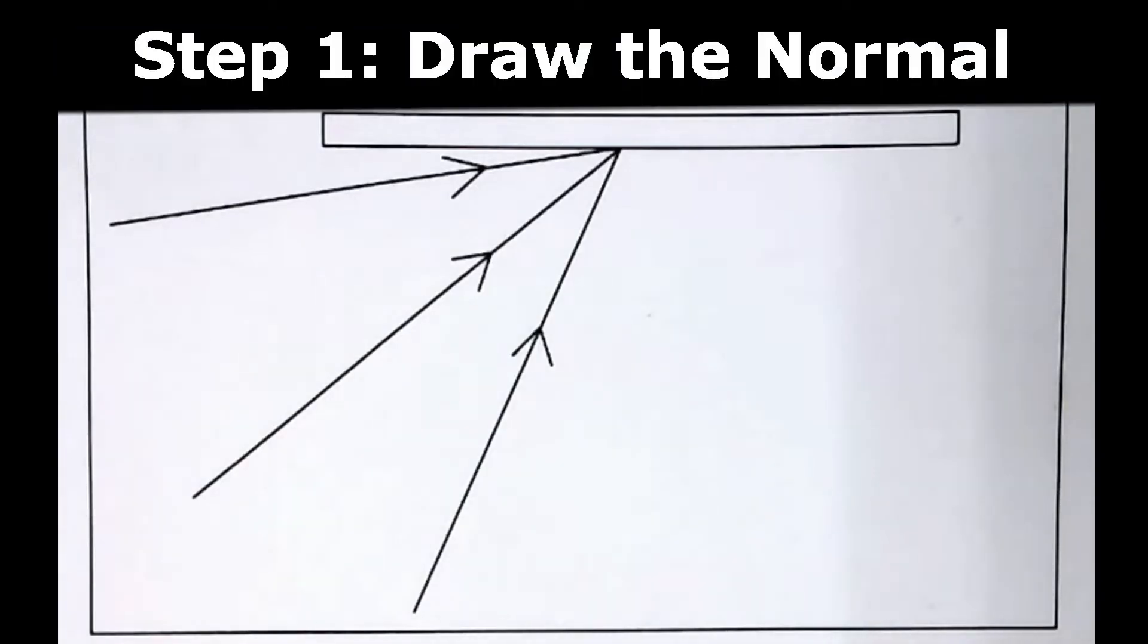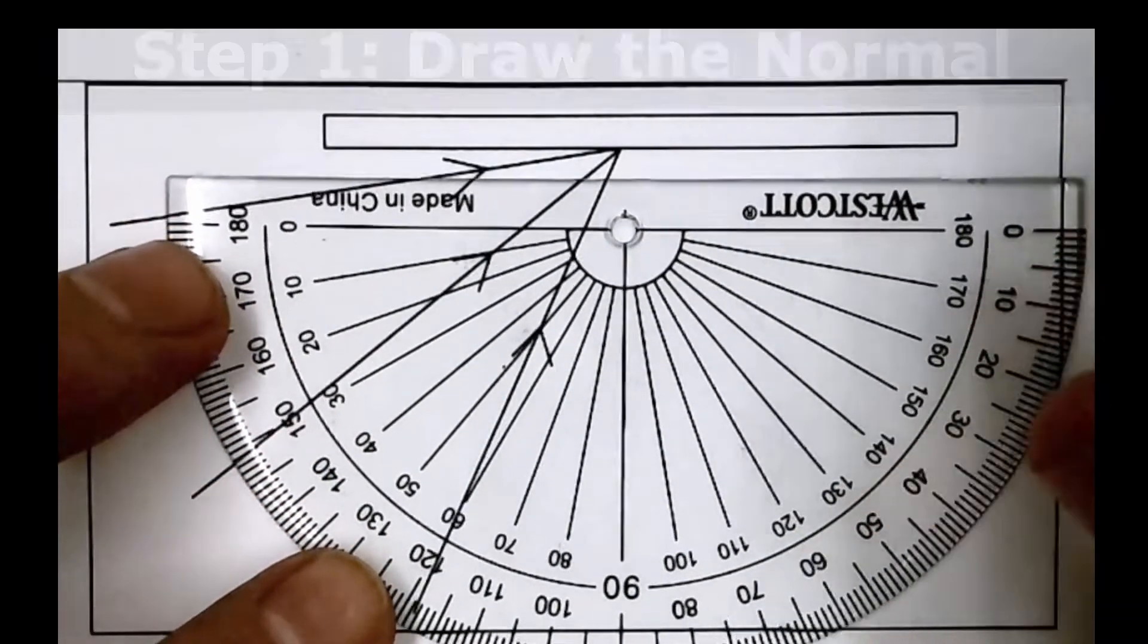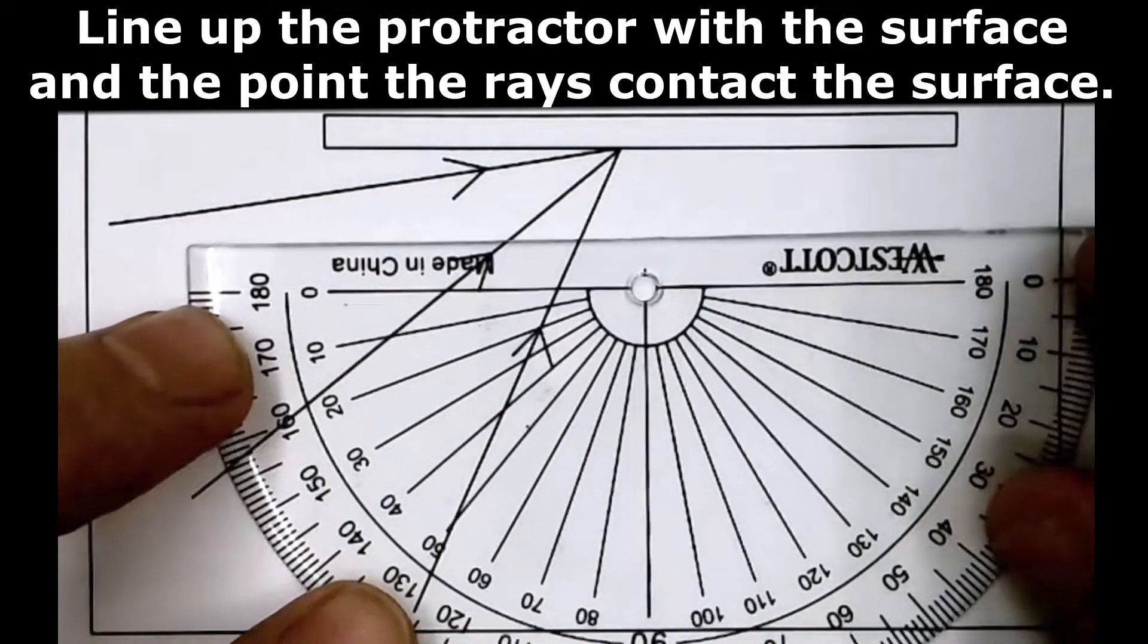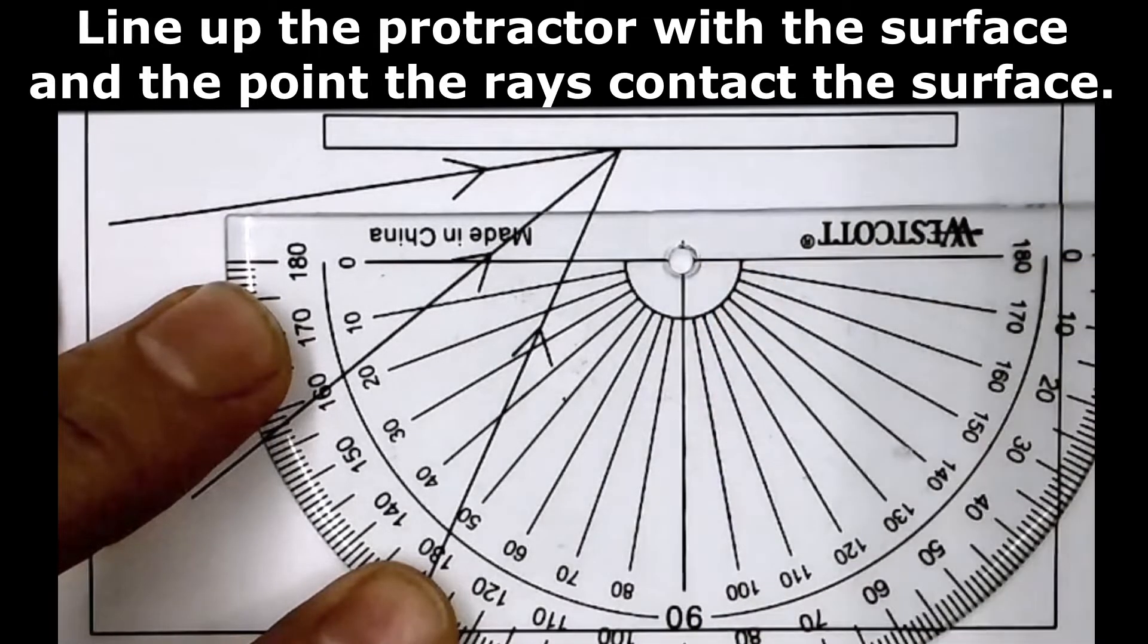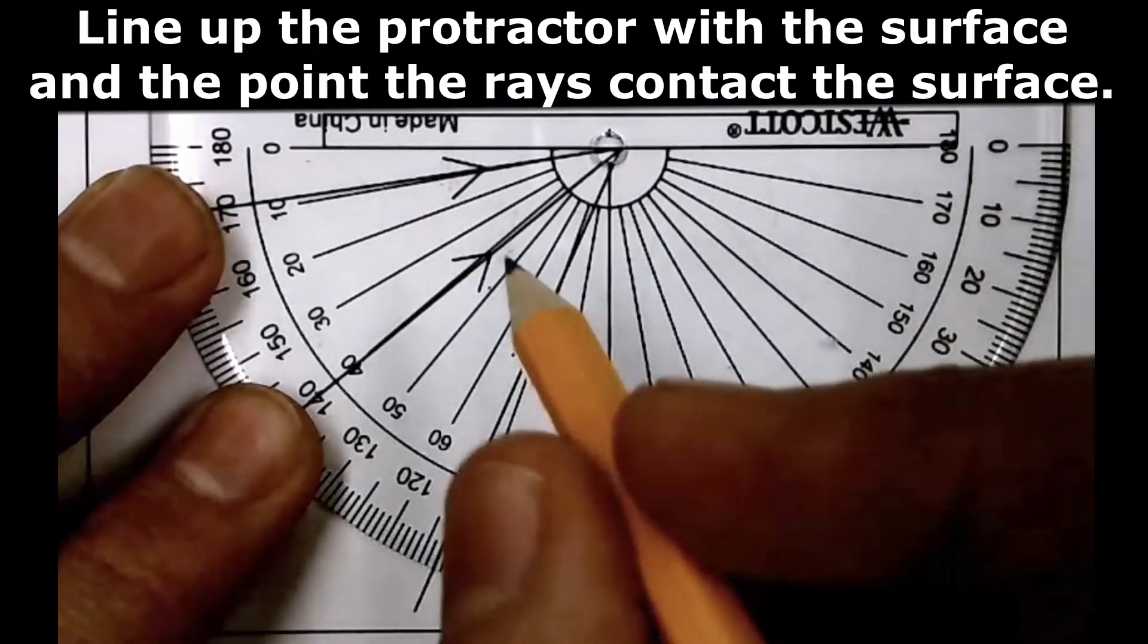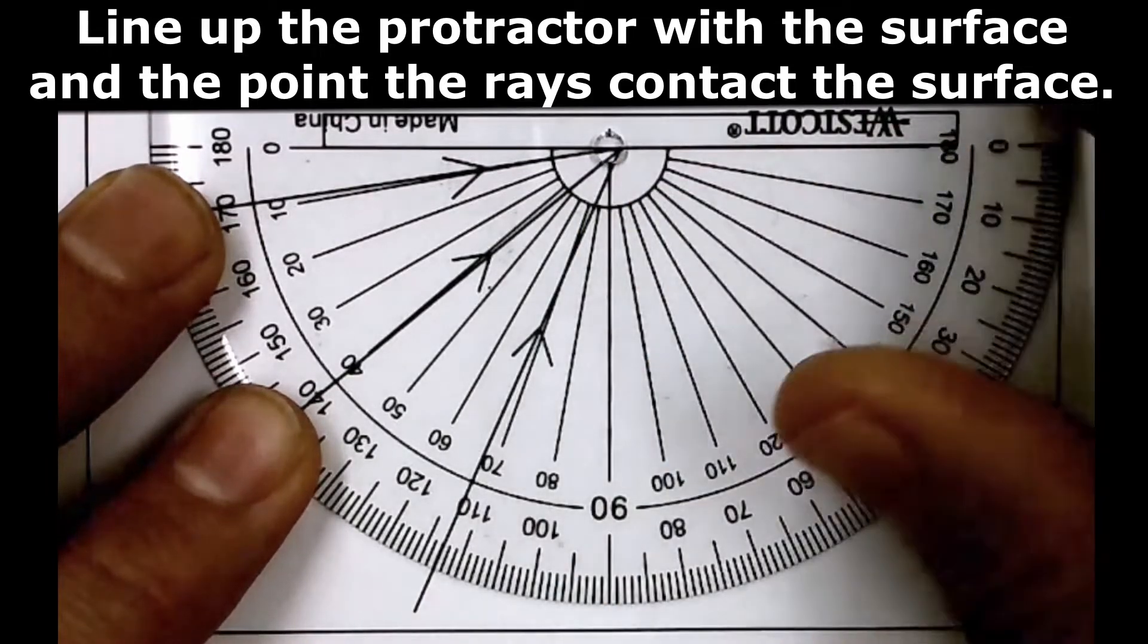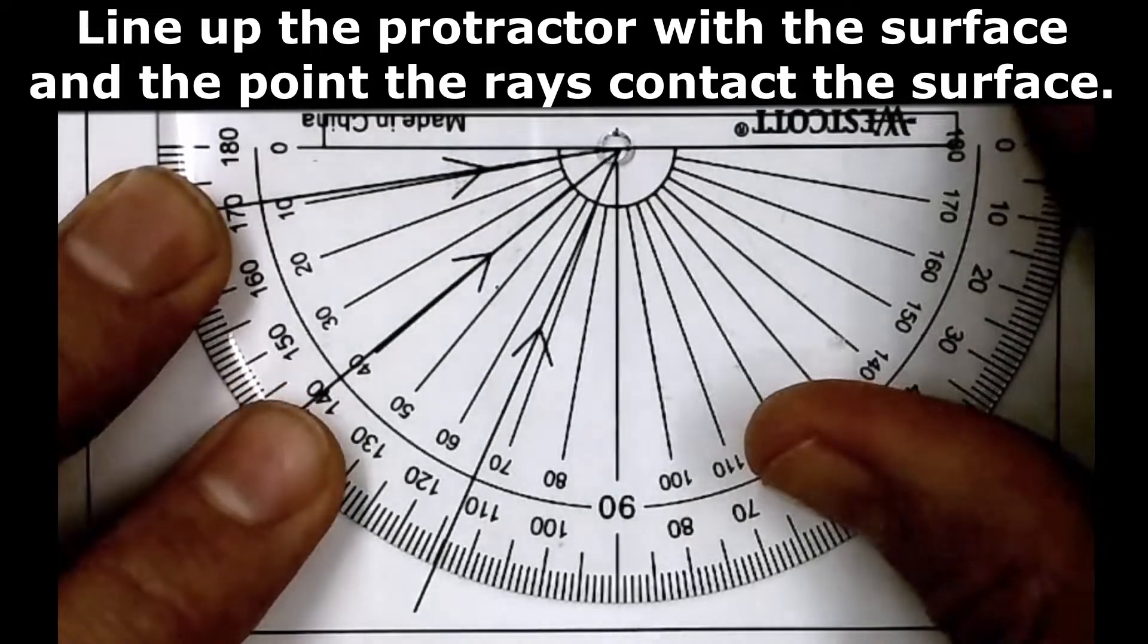Our first step is to draw the normal. The best way to do that is to use our protractor. Let's line up the protractor with the surface that the rays are reflecting off of. Notice this protractor has a little circle in the middle which serves as a target. So we can line up the protractor to the surface along here and we can use the circle in the middle to aim.